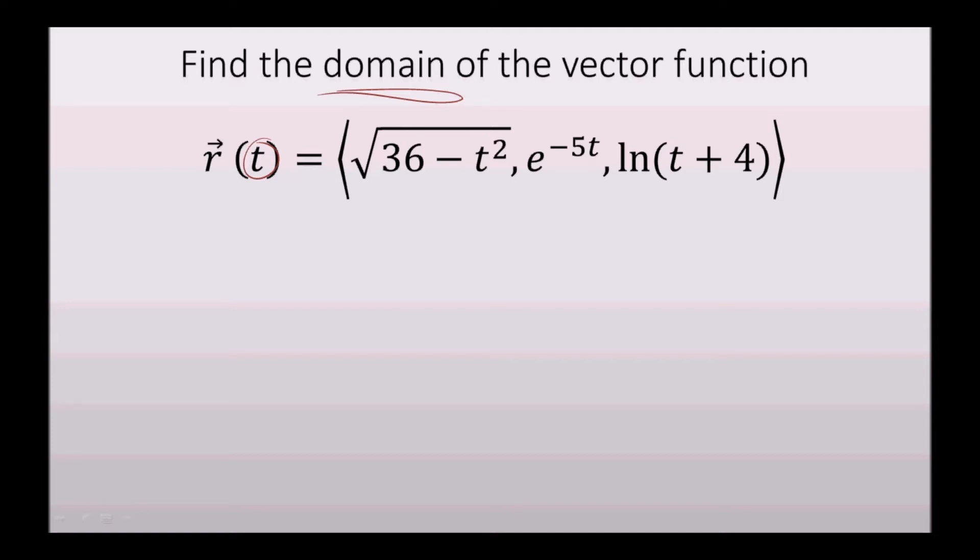So to do this, we can look at the individual components. There are three in this vector function, and see what the limitations are for t so that each component is defined.